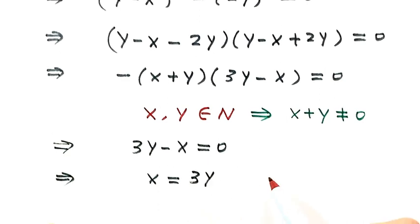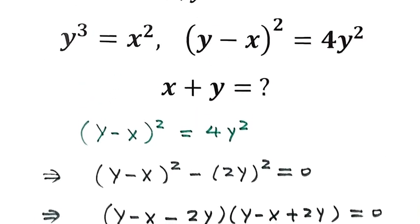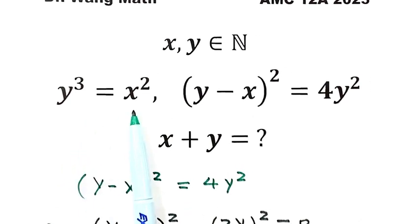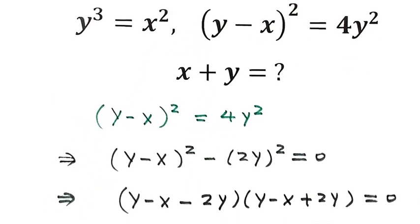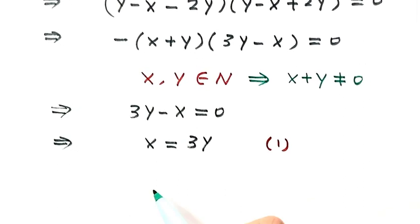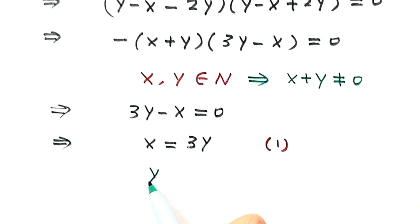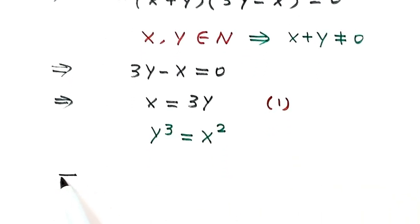So let's label this one as result 1. Now let's use the first given condition, which is y cubed equals x squared. Given y cubed equals x squared, now use 3y to replace x here. Then y cubed equals (3y) squared.